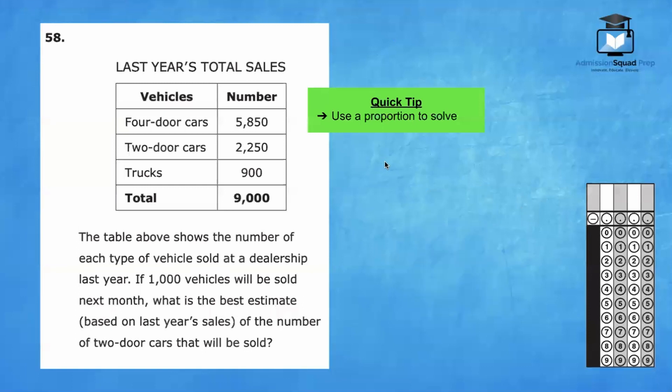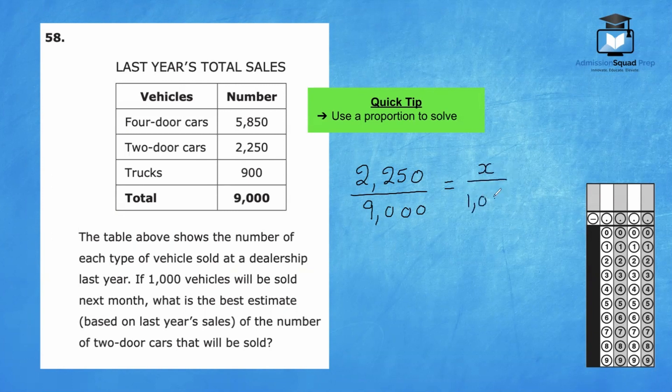Number 58. We have a table that contains last year's total sales. The table above shows the number of each type of vehicle sold at a dealership last year. If 1,000 vehicles will be sold next month, what is the best estimate based on last year's sales of the number of two-door cars that will be sold? Looking at the table, there were a total of 2,250 two-door cars that were sold out of a total of 9,000 vehicles. For this year, we need to determine what amount that would be equivalent to out of a total of 1,000 vehicles. We can use a proportion to solve this problem.